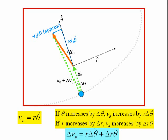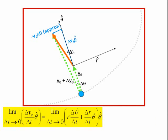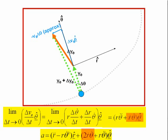It follows that delta-v-theta equals r delta-theta-dot plus delta-r theta-dot. The rate of change is given by the limit as delta-t tends to 0 of r delta-theta-dot plus delta-r theta-dot, all times theta-hat, which equals r theta-double-dot plus r-dot theta-dot, times theta-hat. The second term of this expression is the remaining half of the Coriolis acceleration, which arises from the change in the tangential speed due to the change in the radial distance.